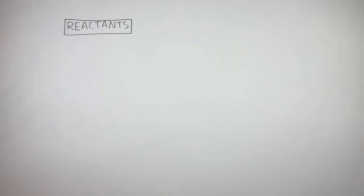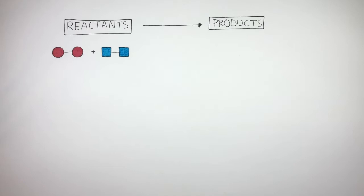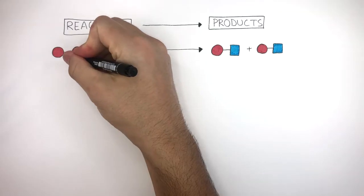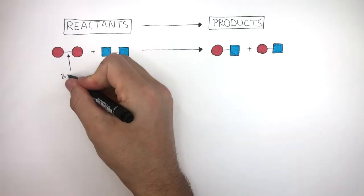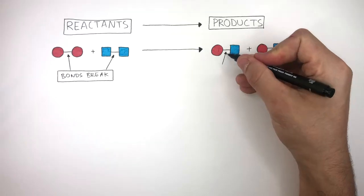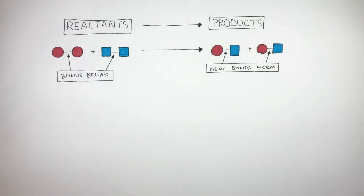In any chemical reaction, there are always reactants on the left and products on the right. So in this example, these reactants will react to form these products. The bonds break between the atoms in the reactants, where new bonds form between the atoms in the products.